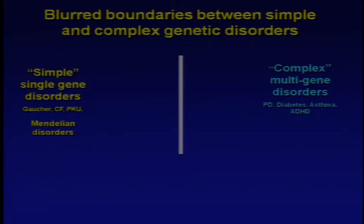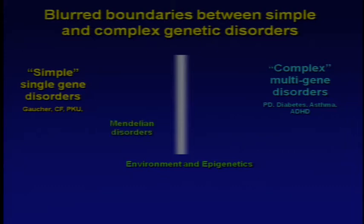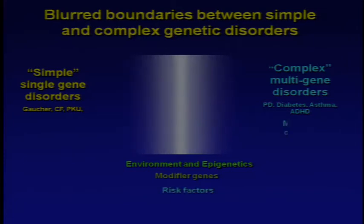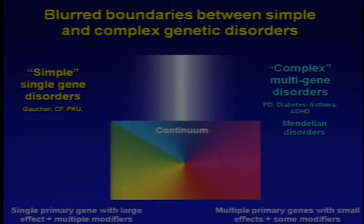The Mendelian disorders were considered simple because they fit into the single gene disorder category. But we started to see this boundary between these two discrete categories becoming blurred when things like environment, epigenetics, modifier genes, and risk factors started to blur the distinctions. Today we see these disorders more as a continuum, where on one side there's a single primary gene with a large effect, and on the other end multiple primary genes with small effects.